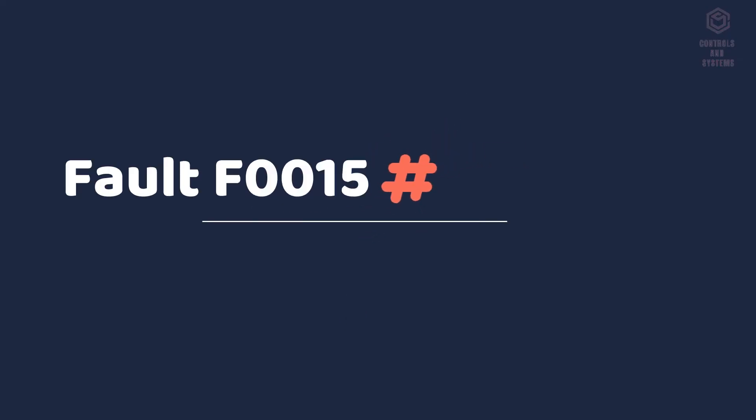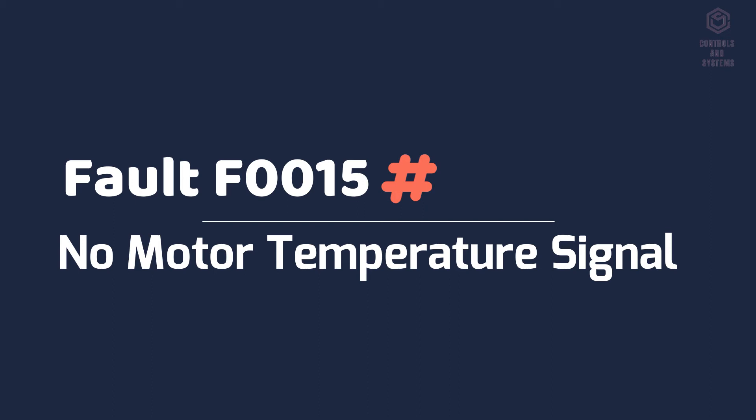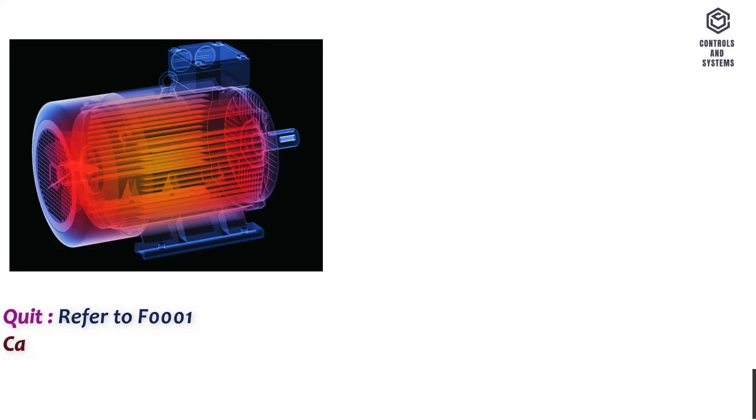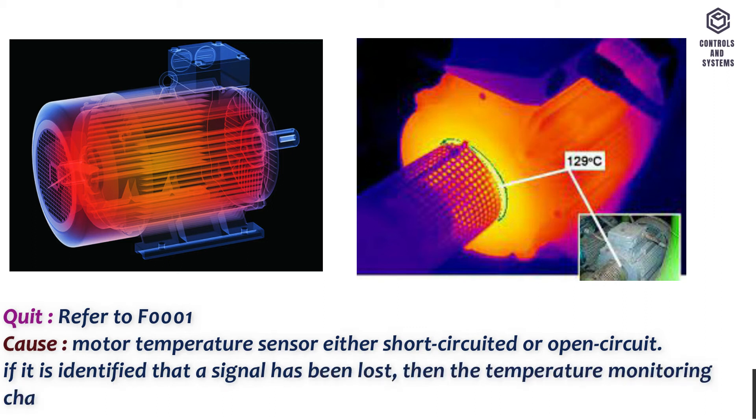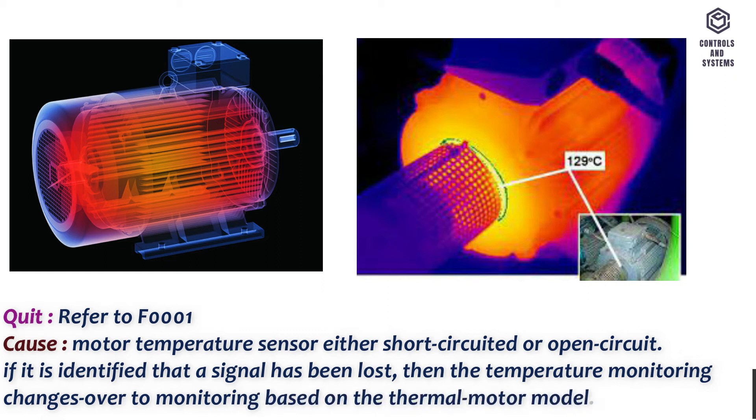Fault F0015 no motor temperature signal. Quit: Refer to F0001. Cause: Motor temperature sensor either short-circuited or open-circuit. If it is identified that a signal has been lost, then the temperature monitoring changes over to monitoring based on the thermal motor model.